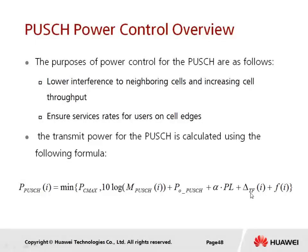Delta TF is the transport format offset. The calculation assumes a basic transport format, so if a different transport format is used, the delta preset for each modulation and coding scheme must be included. Plus FI, which is feedback from the eNodeB. Without FI, this is open loop power control. Since PUSCH is used in continuous transmission, for subsequent transmissions the eNodeB sends feedback in the form of TPC, and the UE converts TPC into the power adjustment FI, which is used to adjust PUSCH power.